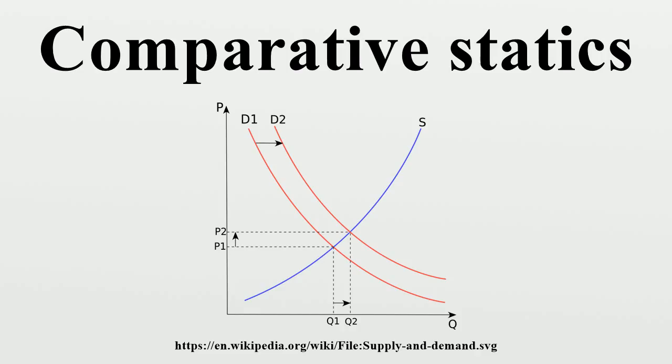Suppose that price adjustments in the market occur according to, where greater than 0 is the speed of adjustment parameter and is the time derivative of the price. That is, it denotes how fast and in what direction the price changes.